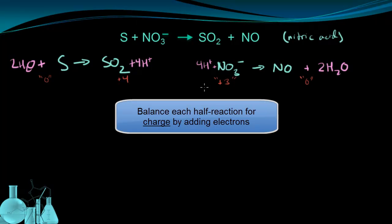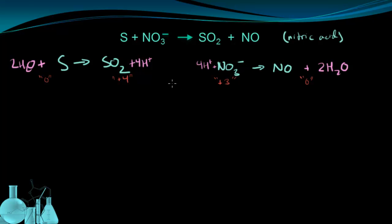Just like in the last video, we balance charge by adding electrons. Electrons are negative, so they lower the overall charge on one side and we're trying to get them even. I need to bring the plus four in the first half-reaction down to zero, so I add four electrons. For the second half-reaction, I need to get rid of the plus three on the left side, so I add three electrons. Each half-reaction is now balanced for mass, atoms, and charge.